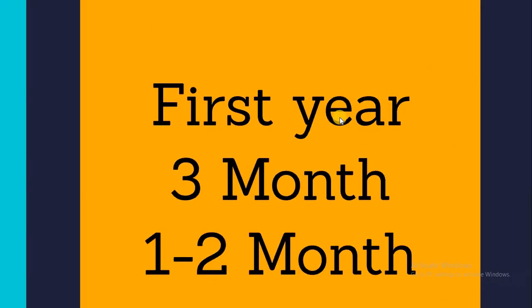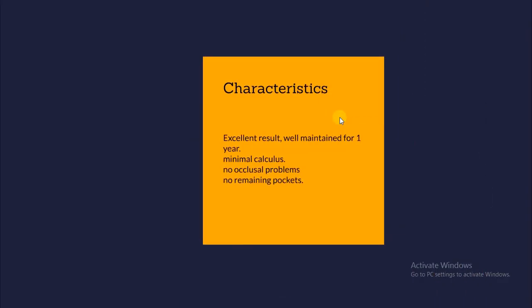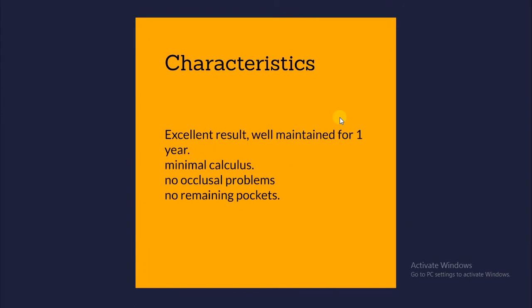In Class A patients, we need a six-month to twelve-month recall. This patient has excellent results, well-maintained for one year, minimal calculus, no occlusal problem, no remaining pockets, and more than 50% of alveolar bone remaining. Because it is an excellent result, in these cases we need six months, maximum one year for recall visits or maintenance.